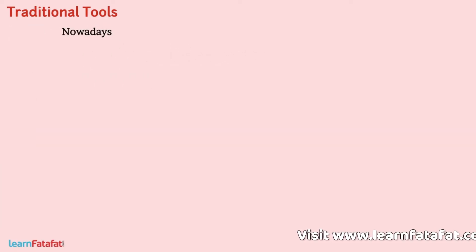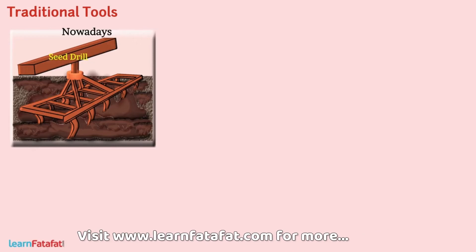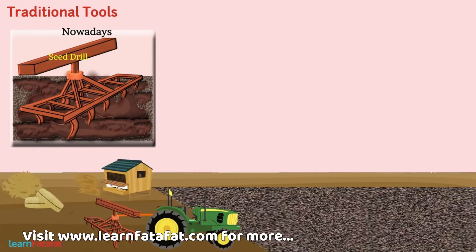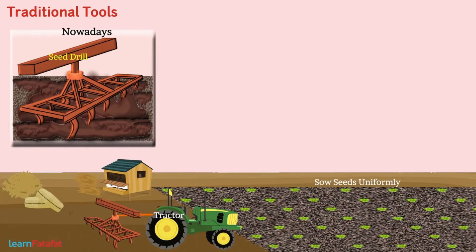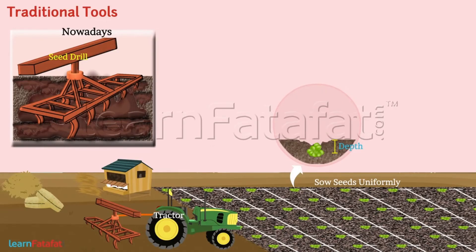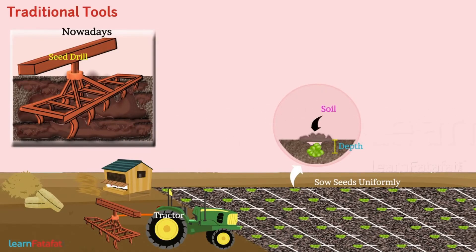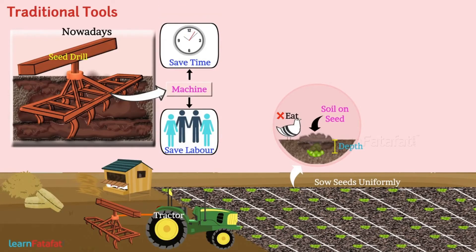Nowadays, we use a more improved tool, i.e. a seed drill, which is used for sowing with the help of a tractor. With this tool, it is possible to sow seeds uniformly at proper distance and depth. This tool also helps to place soil on the seeds so that birds cannot eat them. Because of machines used for sowing, a lot of time and labor can be saved.